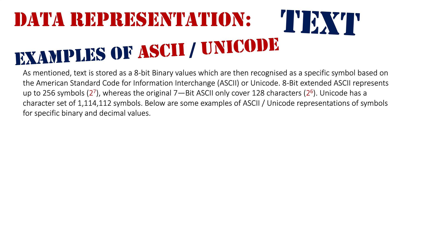That gives us our full 256 values. Originally ASCII was 7-bit, only covering 128 values, which is why a lot of letters — like A as we saw before — were only 7 bits in length, part of that 128-character set. They extended upon that to include more symbols. Unicode is obviously a lot larger — it's got over a million symbols available, covering all writing systems in the world.